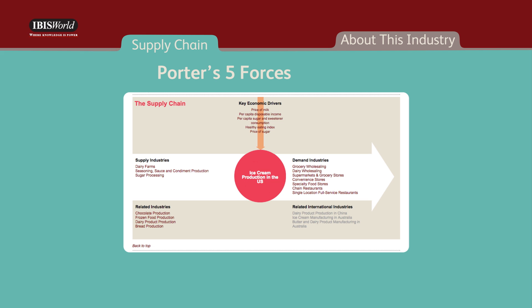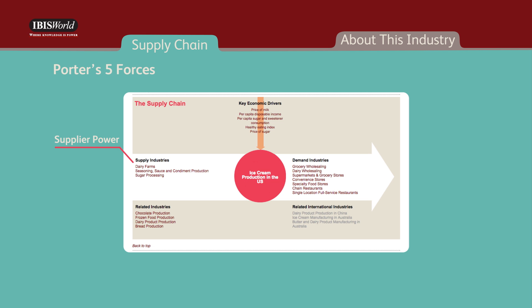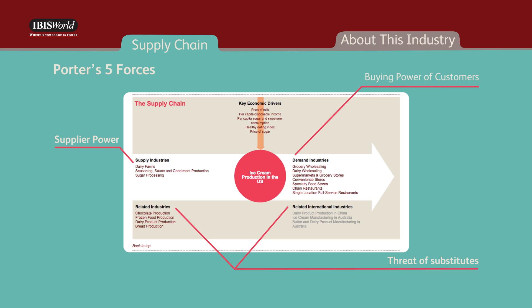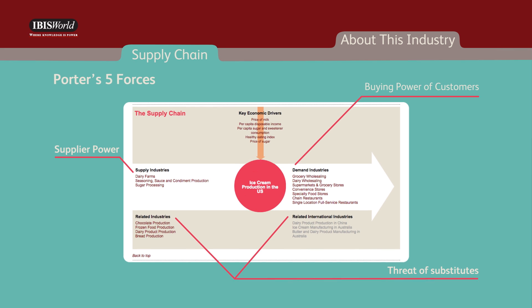The Supply Chain section includes three of Porter's five forces: supplier power, threat of substitution, and buying power of customers.